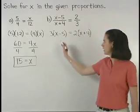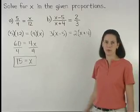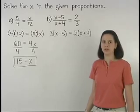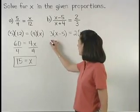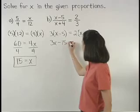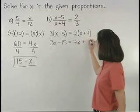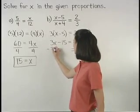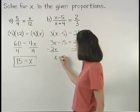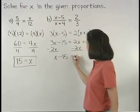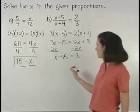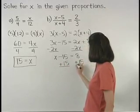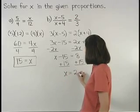Notice that we put the x minus 5 and the x plus 4 in parentheses. Now, distributing on both sides of the equation, we have 3x minus 15 equals 2x plus 8. And subtracting 2x from both sides gives us x minus 15 equals 8. And adding 15 to both sides, we find that x equals 23.